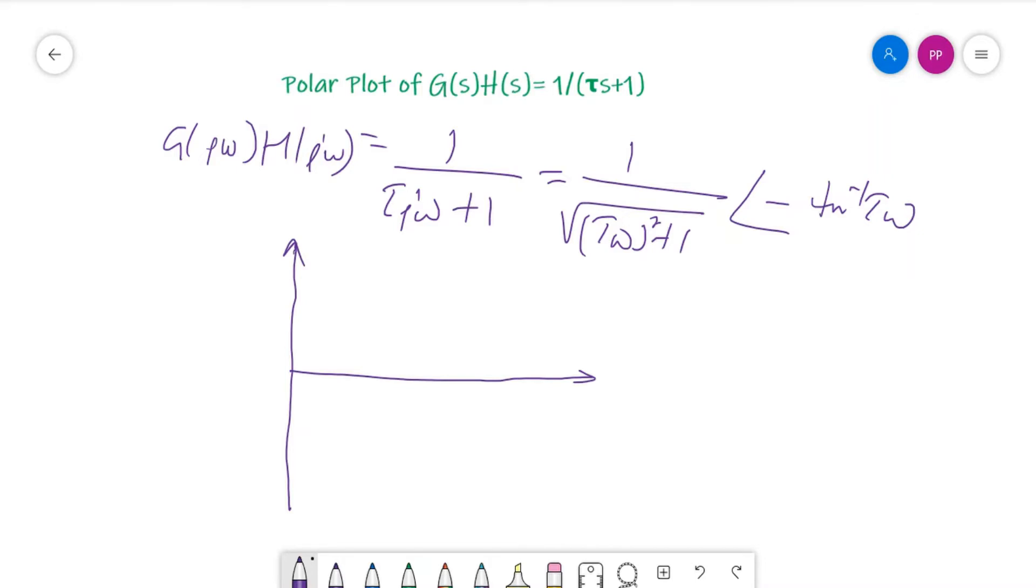With this, if we place ω equal to 0, we will get the magnitude is 1 and angle is 0. And if you place ω tends to infinity, then you find magnitude is 0. This will enter the origin at an angle of minus 90 degrees because here the value ω is infinity, so this angle is minus 90 degrees.